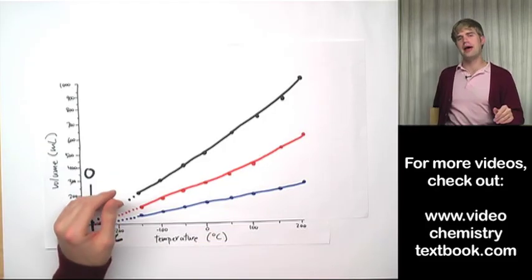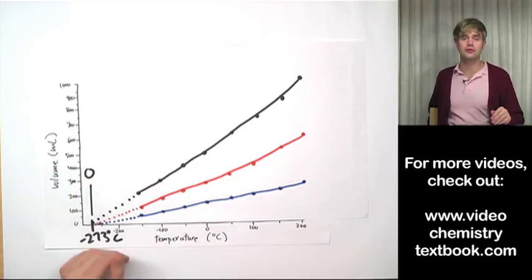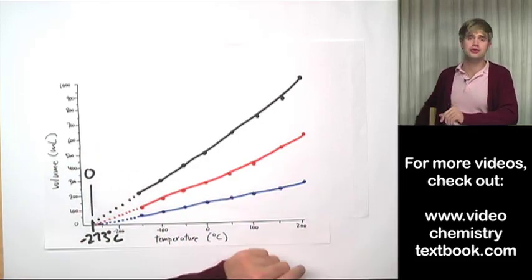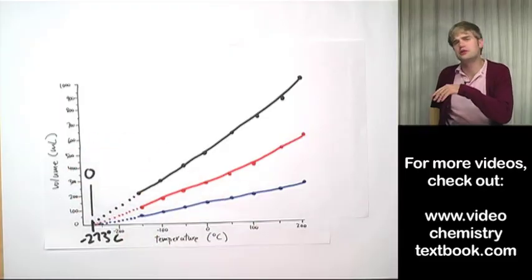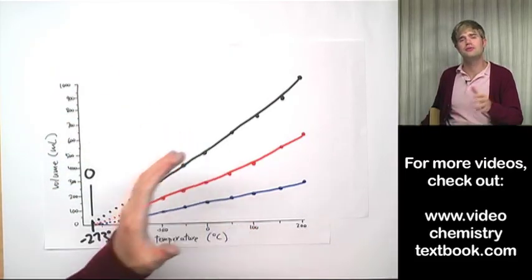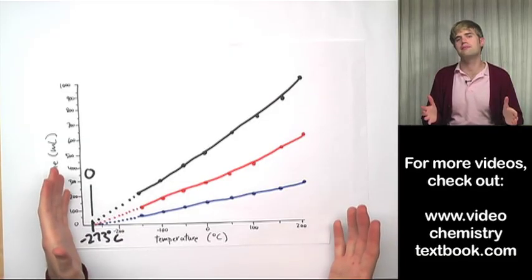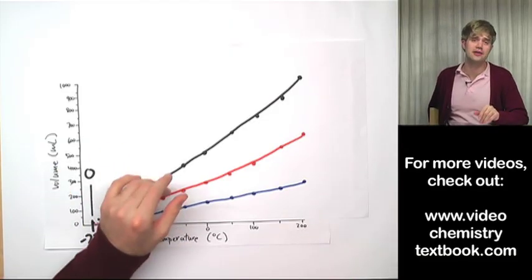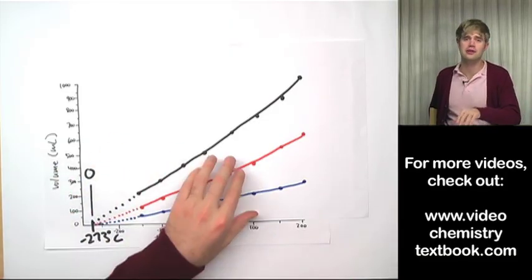So that's a little bit about absolute zero and how it was discovered in the first place and then the discovery of the Kelvin temperature scale. We use Kelvin temperatures a lot when we're doing problems with gas. And so if you're interested in why the Kelvin temperature is important, take a look at the video called What's the Point of Kelvin Temperatures?